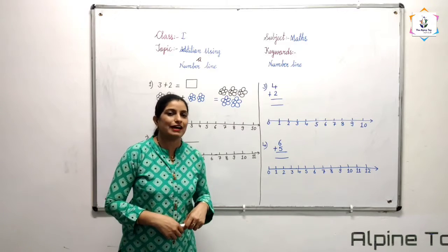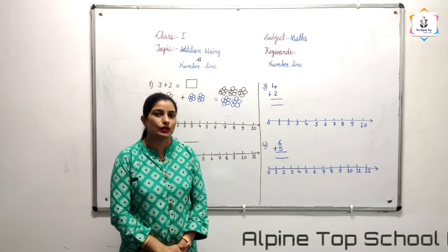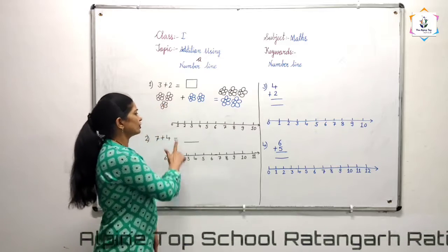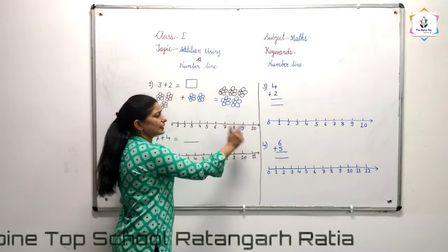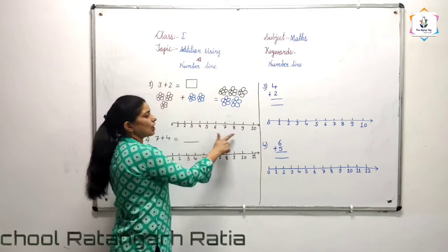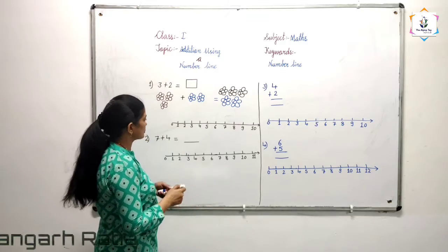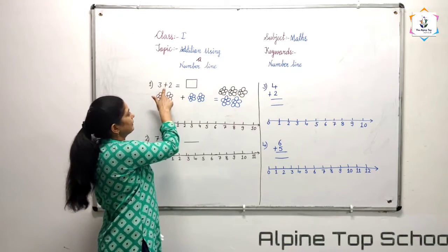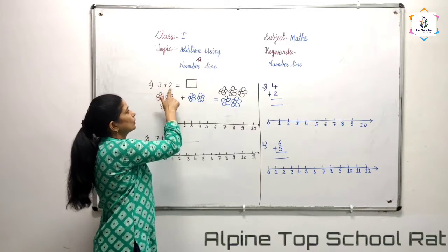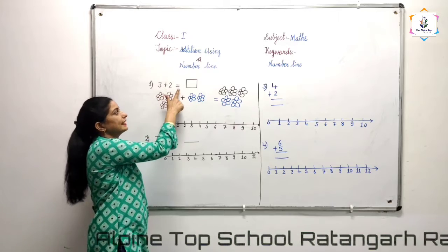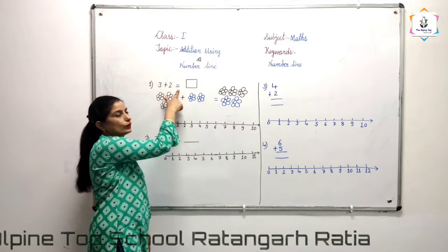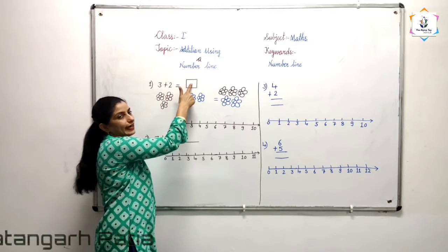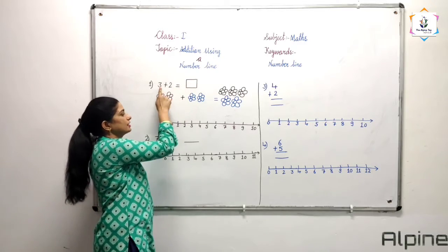Children, if we don't have flowers or any other object to count, what should we do? We should count on our number lines. We can count like this also. See, we have to add 3 plus 2. This is the sign of plus and this is the sign of equal to. 3 plus 2 is equal to — and here we have to write the answer.